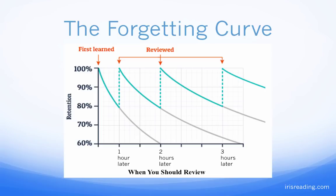The forgetting curve — this is how all human beings learn and then start forgetting. We learn something, we're at 100% retention. Maybe you learn someone's name when you hear it for the first time, or you've learned a new vocabulary word, or you've read a paragraph, a page, or a chapter of text. We have a certain amount of retention and then we start forgetting the information, initially at a very rapid pace. You see this curve initially — that's a very steep slope.